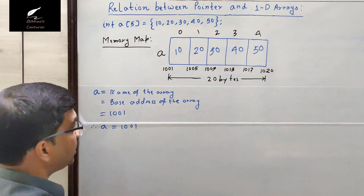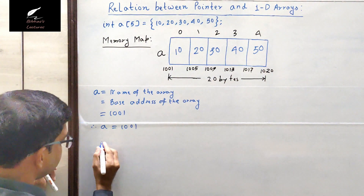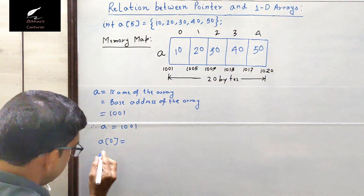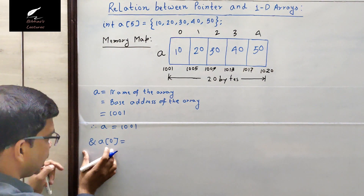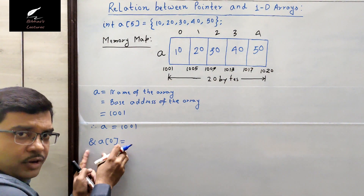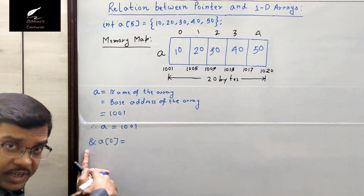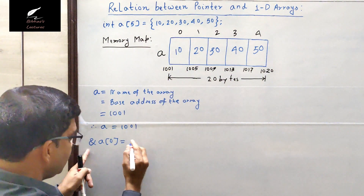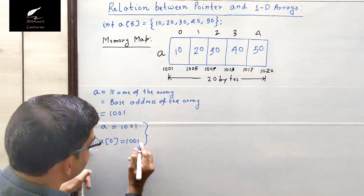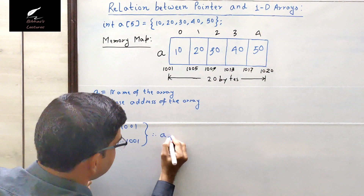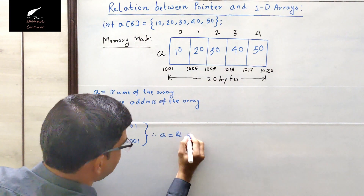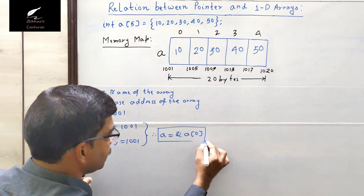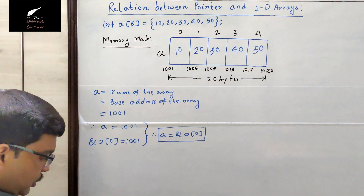The first element of this array is a[0]. To find the address of the first element, the ampersand is the 'address of' operator, so &a[0] fetches the address of the first element, which is also 1001 because that is where the first element is stored. So 'a' and &a[0] are the same — both equal 1001.